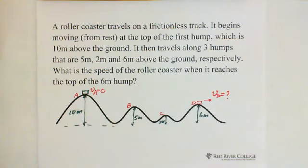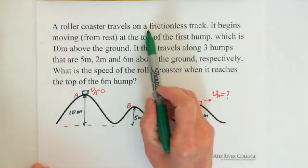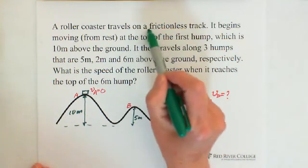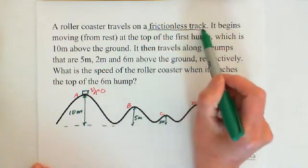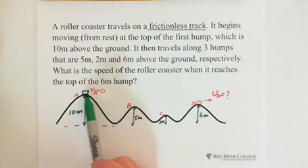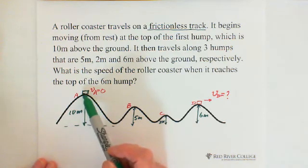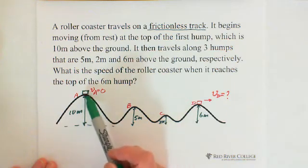Because this question exactly follows the conditions of conservation of mechanical energy. So frictionless track, so no friction. And it's sliding down with no pushing force.